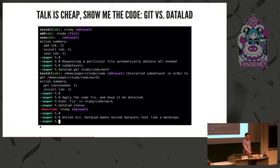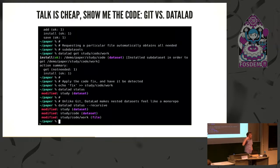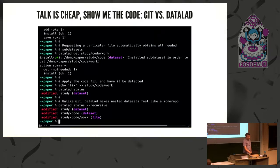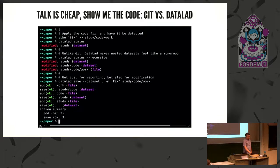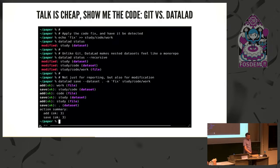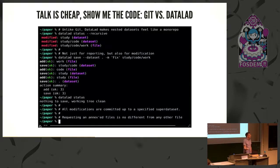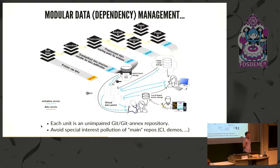DataLad makes this hierarchy of nested repositories feel like a single monorepo. You can do status requests and it tells you not only that a top-level sub-dataset is modified, but gives an indication of what's happening all the way down. Because it can do that, you can say `save` for the entire thing and it commits the actual change to the right repository, propagating commit messages all the way up for a clean hierarchy.